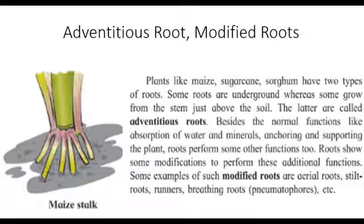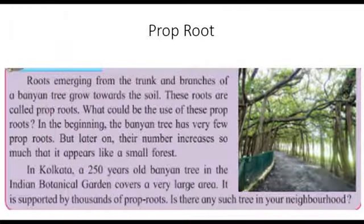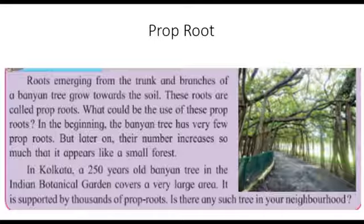Now consider: What would happen if plants like tamarind, bean, banyan, and mango had fibrous roots? What will happen if the root tip is injured? Which type of roots do fenugreek, spinach, and onion plants have? Why are the underground parts of plants like radish, carrot, beetroot, and sweet potato thick, fleshy, and swollen? Which part of the plant are they?